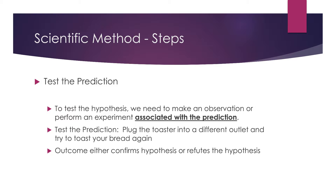The next step is to test the prediction you've just made. To test the hypothesis we made a prediction, and we need to make an observation or perform an experiment associated with that prediction. For example, you might plug the toaster into a different outlet and try to toast your bread again. What you are trying to do is either confirm or refute your hypothesis. If it works you accept your hypothesis; if the toaster still doesn't toast bread, you reject your hypothesis and will have to make another one.